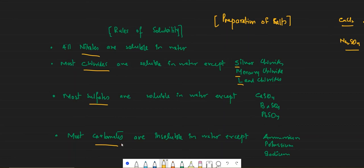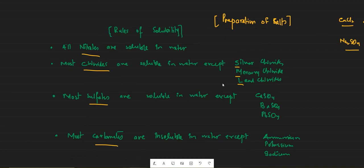Most carbonates are insoluble in water. This is different from the other three classes. The exceptions — the soluble carbonates — are ammonium, potassium, and sodium carbonates. Remember them as APS: Ammonium, Potassium, Sodium. The rest of the carbonates are insoluble.